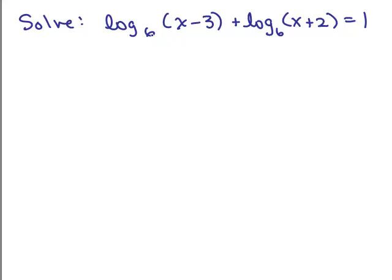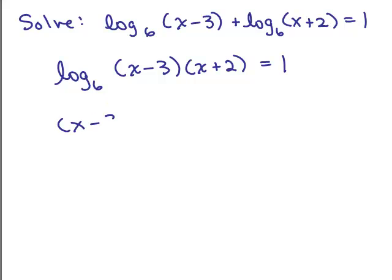Okay, we've got two logs with the same base added on the left side of the equation, so we combine that into one log using the product property. That's log base 6 of x minus 3 times x plus 2 equal to 1.